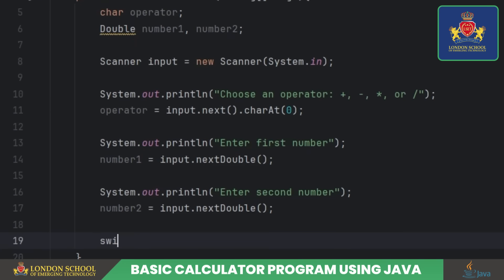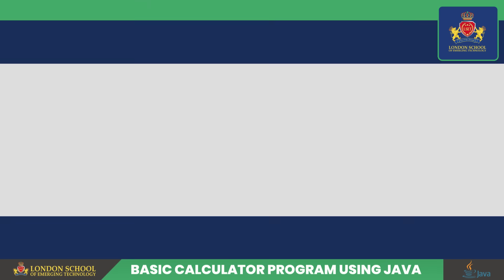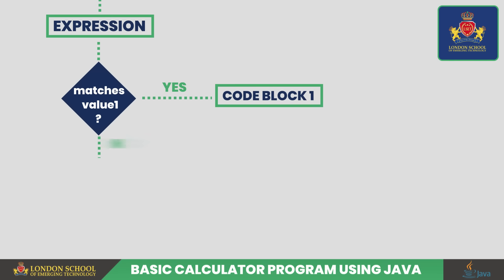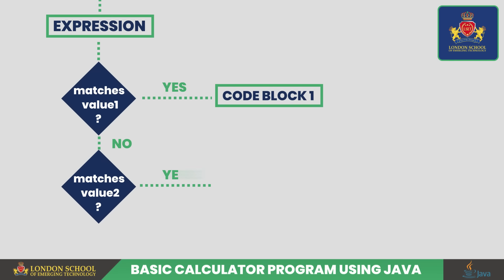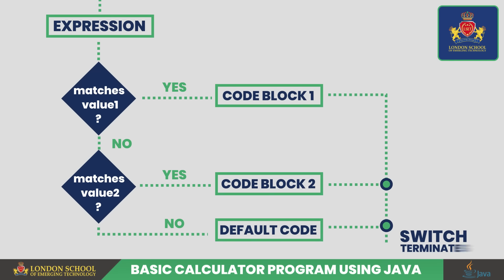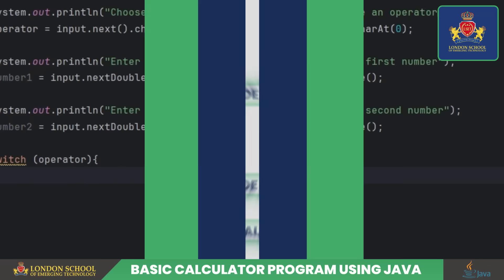The plot thickens with a switch statement — it's like our script, directing the flow based on the chosen operator. We start with a switch statement that evaluates the value of the operator variable, which allows us to perform different actions based on its value.